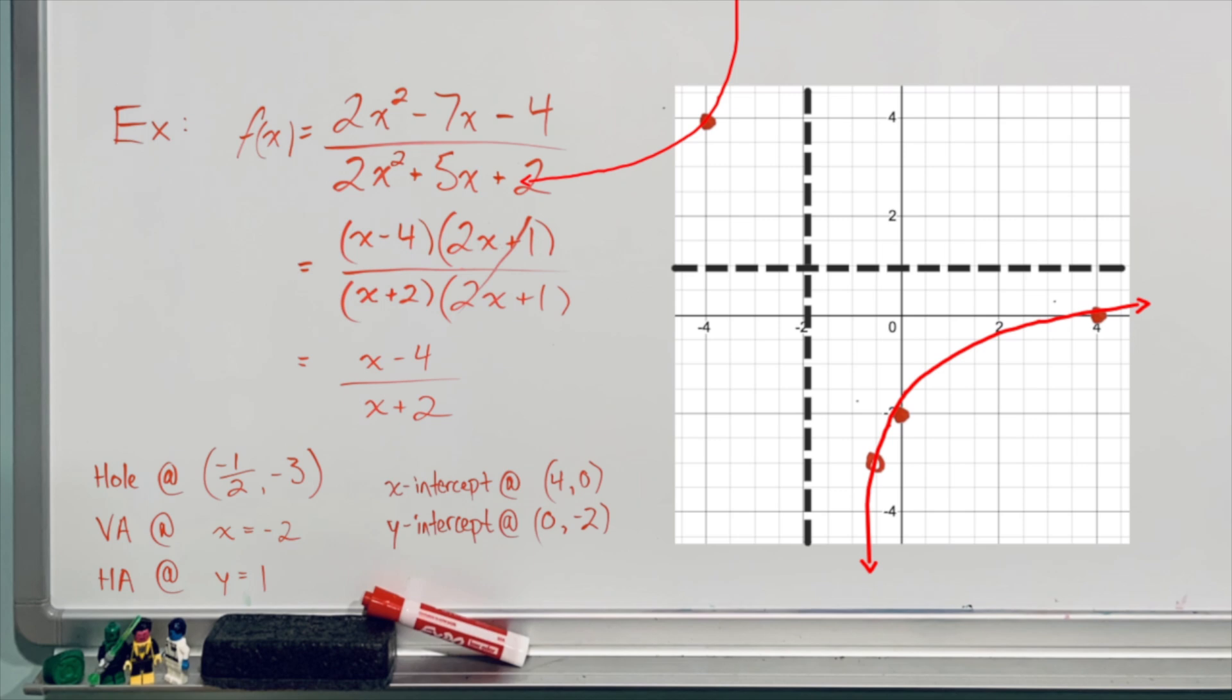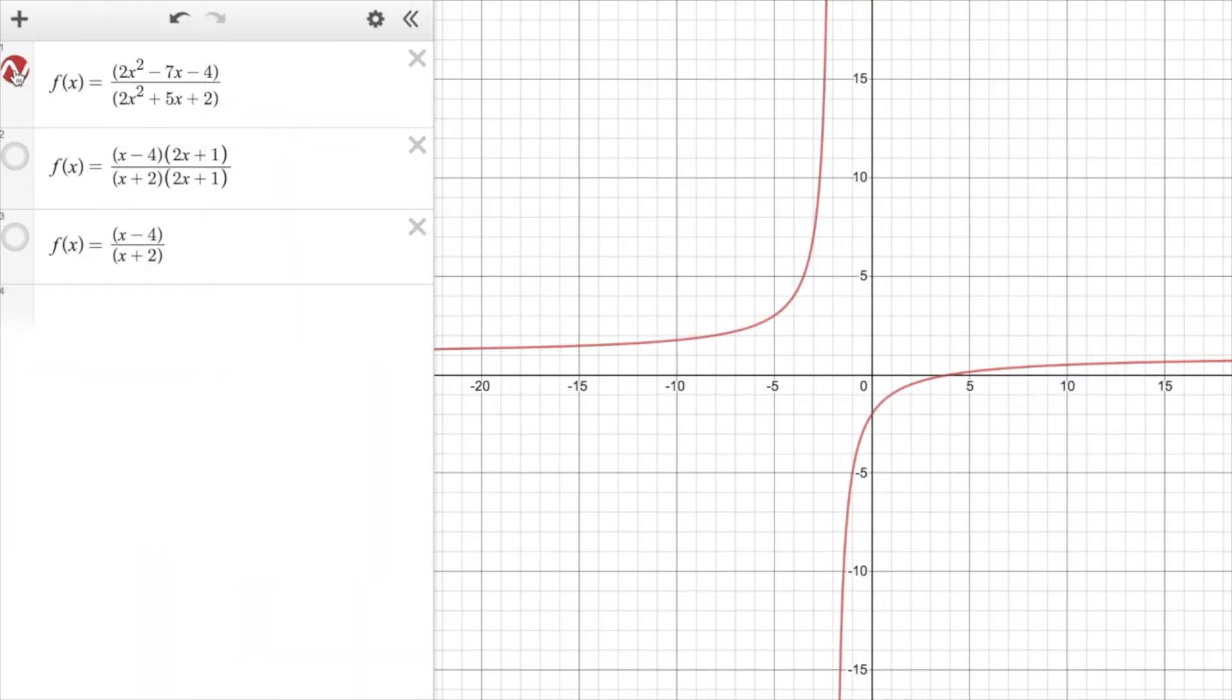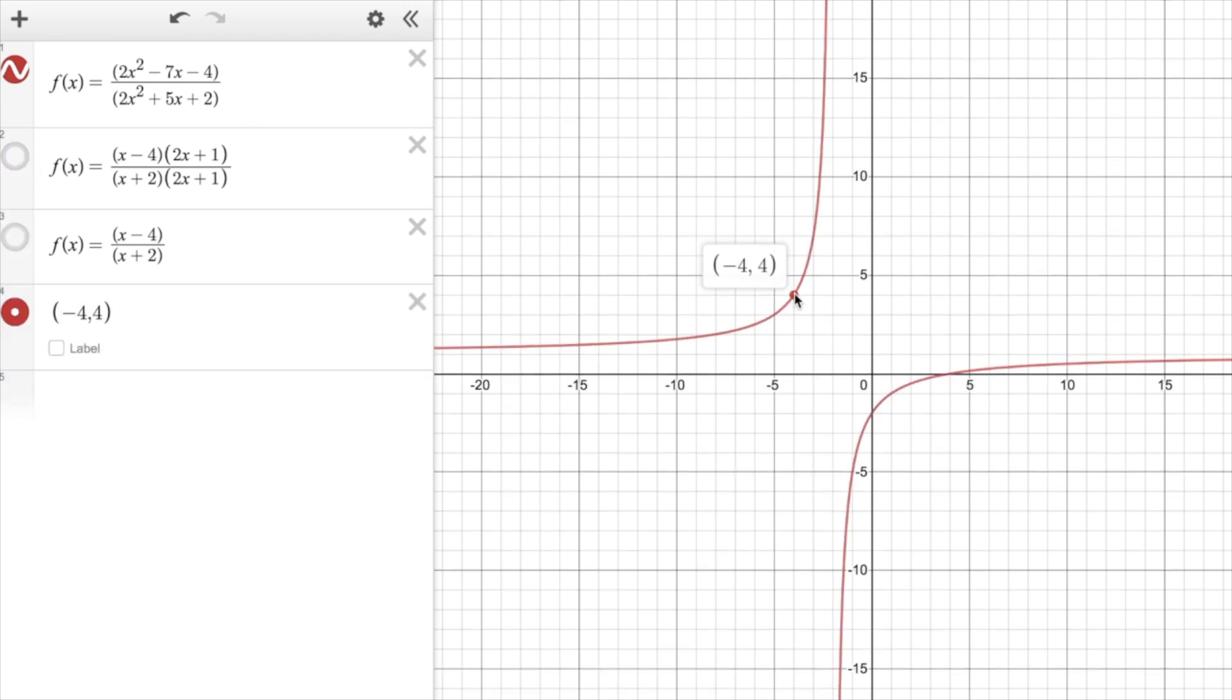What I encourage you to do is just check your answer using Desmos, and so I'll pop over to Desmos right now, and you can see I've already graphed the original function here in red, and if I toggle on the factored form shown in blue here, you can see that that's equivalent to the red function. There's no change there. And lastly, if I toggle on the simplified expression, which appears in orange, you can see all three of those forms are equivalent. If I plot that point I showed you at negative 4 and 4, you can see that it does in fact fall on that rational function.